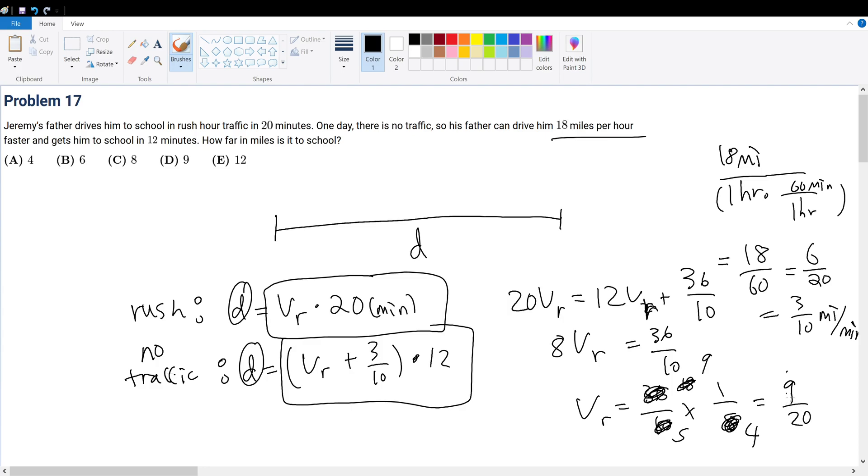So then we are trying to find the distance. So how far in miles? Well, the distance will be equal to 9 over 20 times 20, which is equal to 9 miles. So your final answer will be answer choice D.